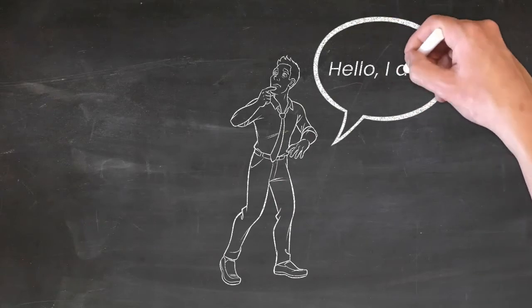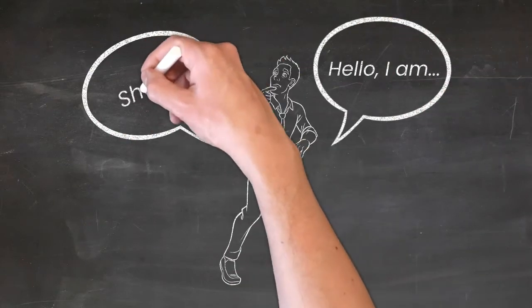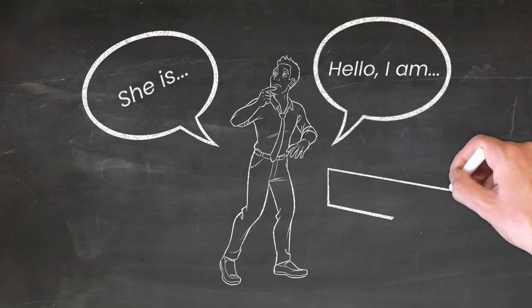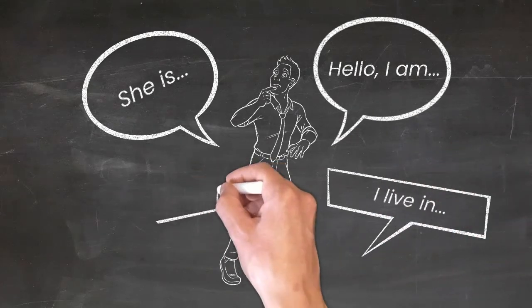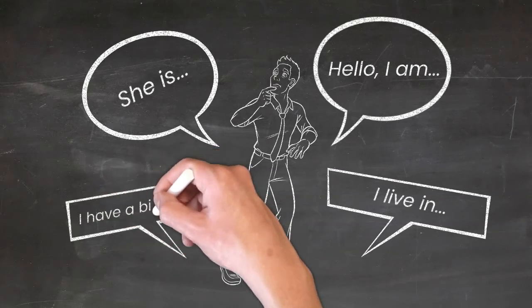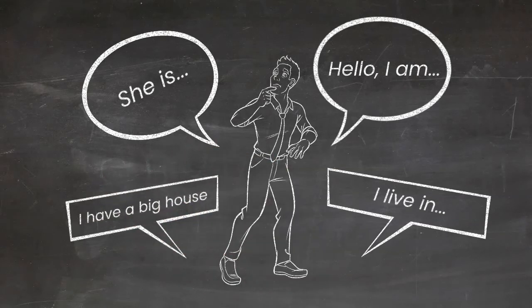You can introduce yourself and others, ask and answer questions about personal details, for example where you live, people you know, things you have, and you can in some ways put together flowing speech on familiar topics.